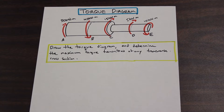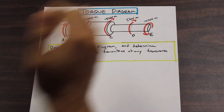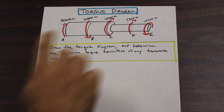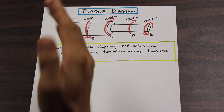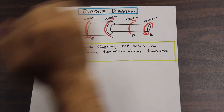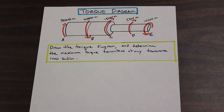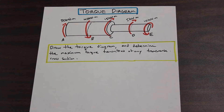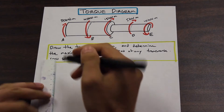Let's see what we're given here. We're given a shaft with five different external torques acting on it, all labeled A, B, C, D, E, and they're all in units of kilonewton meters. The question asks: draw the torque diagram and determine the maximum torque transmitted at any transverse cross-section. Let's start with drawing the torque diagram.